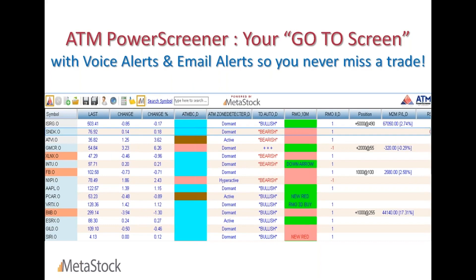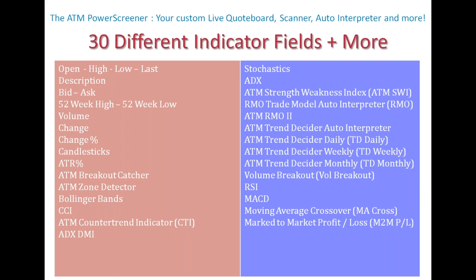All of this I've been talking about — there are so many more different studies. There's the Breakout Catcher, and the ATM RMO 2 which I use for option trade setups. Next week we're going to be doing a webinar on how to trade options with the ATM systems — good to attend if you're looking at options. All the different ATM indicators are programmed into the Power Screener. When you buy the ATM add-on — the Automated Trend Modules — you get the ATM RMO, the Breakout Catcher, the Trend Decider, SWI, and a separate ATM Power Screener application that can scan opportunities for you on end-of-day or real-time, and spot those opportunities for you.